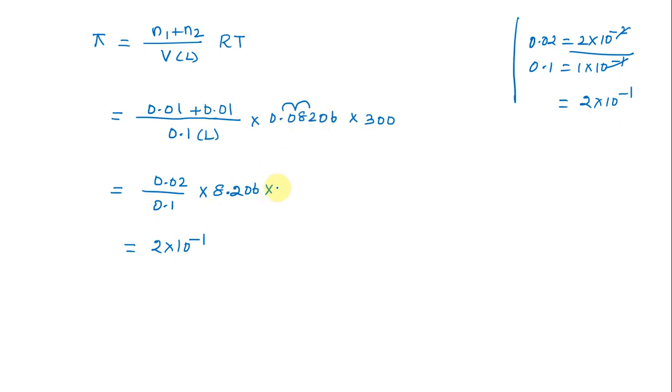0.01 plus 0.01 divided by 0.1. The 10 power minus 2 and 10 power minus 1 cancel, giving 0.02 divided by 0.1 times 8.206 times 3.